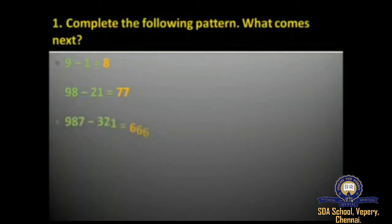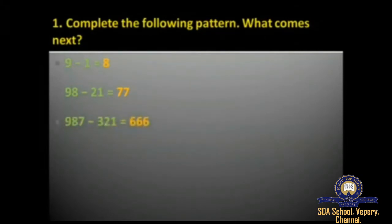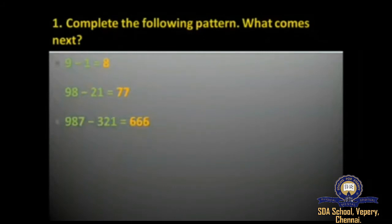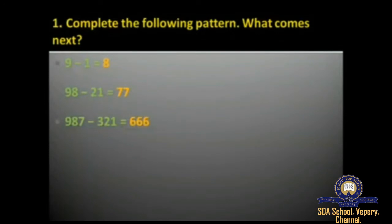The third pattern is 987 minus 321, and when you subtract 321 from 987 the answer is 666. From these three patterns you can observe that the second one is written as 9 and 8, with the subtracted number being 21; the third pattern uses 987 and 321, following the same rule, giving 666.